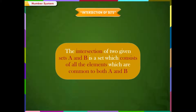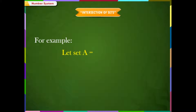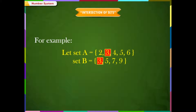Intersection of sets: the intersection of two given sets A and B is a set which consists of all the elements common to both A and B. The symbol for denoting intersection of sets is an inverted letter U. For example, if set A is equal to {2, 3, 4, 5, 6} and set B is equal to {3, 5, 7, 9}, the elements 3 and 5 are common. The set containing these common elements, i.e., {3, 5}, is the intersection of set A and B.